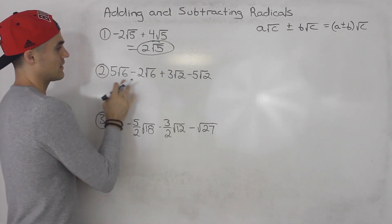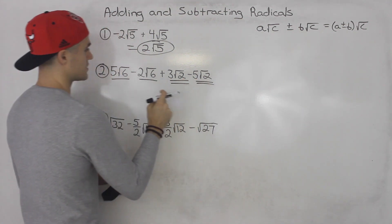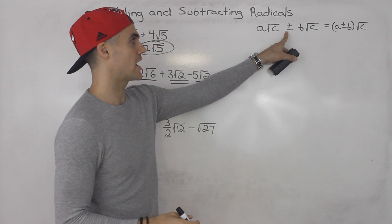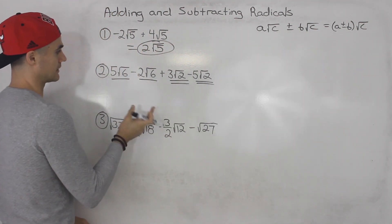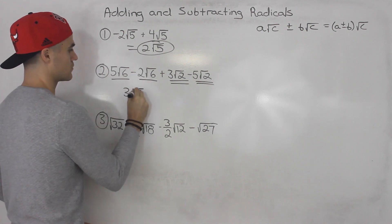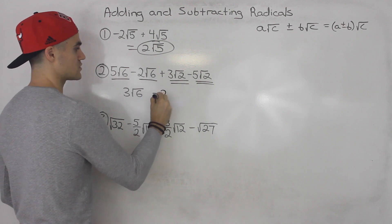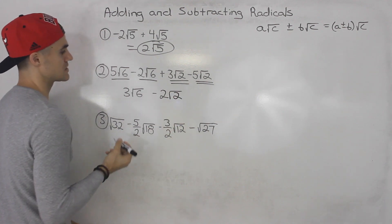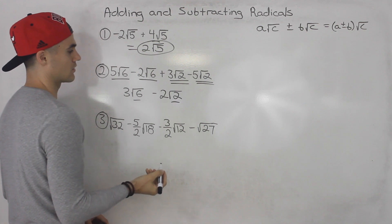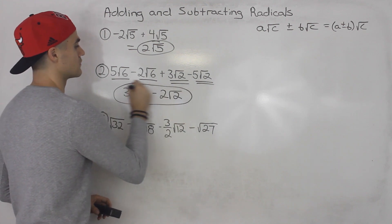This one, notice that we have multiple radicals. We have root 6 here, but then we also have root 2. When you have different radicals, you can't add or subtract them — the only time you can is when the radicals are the same. So it's like collecting like terms. These two root 6's: we do 5 minus 2, which is 3 root 6. Then separately, 3 minus 5 gives us negative 2 root 2. And these two — there's nothing we can do because the radicals are different. So 3 root 6 minus 2 root 2 is the final answer for number 2.